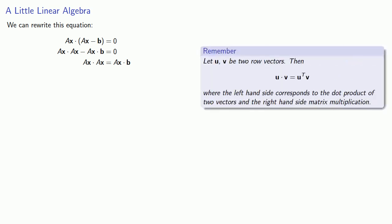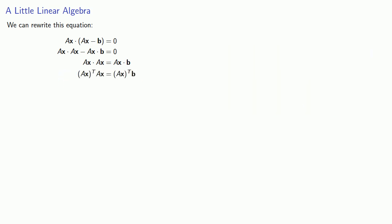Let's rewrite this equation. So I could distribute the dot product. Rearrange my equation slightly. So let's think about this. If u and v are two row vectors, then I can also express the dot product as a matrix product, u^T v. So I could rewrite my two dot products.